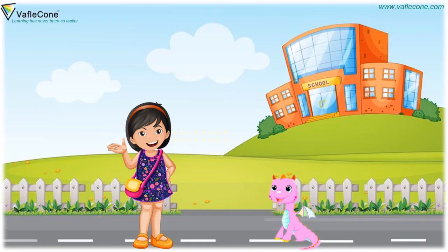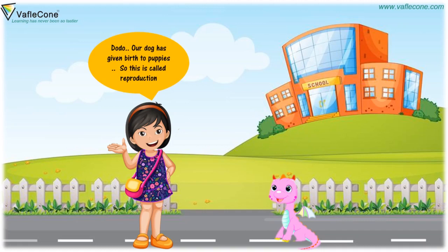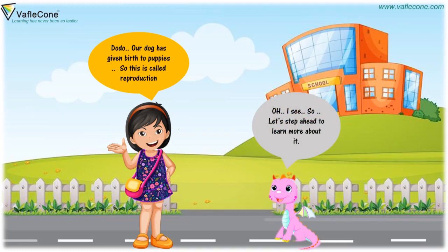Reproduction in Animals. Hey, Jia, you know our pet dog has given birth to four puppies. Really, Dodo? Wow! Our dog has given birth to puppies. So, this is called reproduction. Oh, I see. So, let's step ahead to learn more about it.